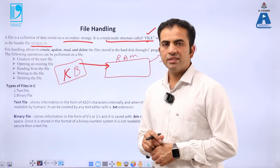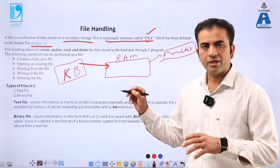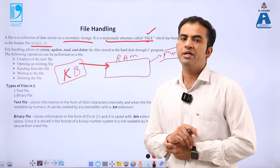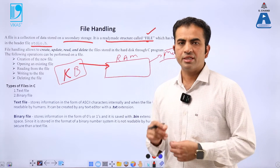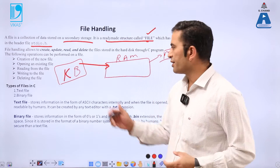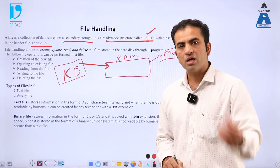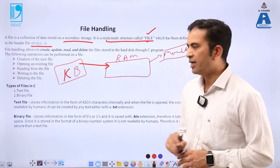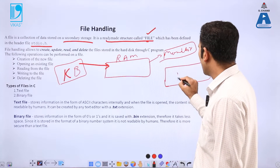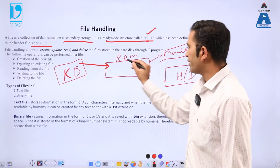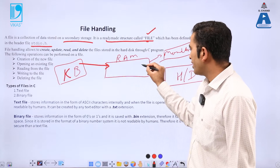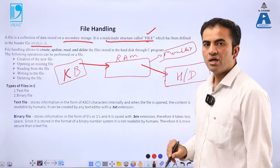File handling is used to save everything — whatever values we are inserting — so those values are permanently placed in the hard disk. To save permanently the data which we are entering from the keyboard into the hard disk, that concept is called file handling. Using file handling, whatever values we are inserting into the RAM, when we save them, those go inside the hard disk.